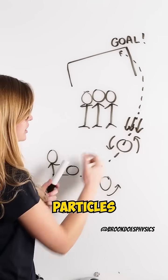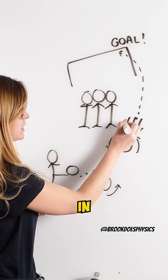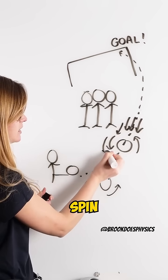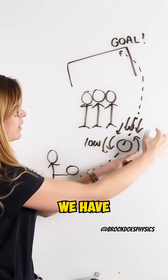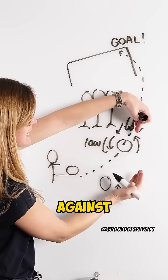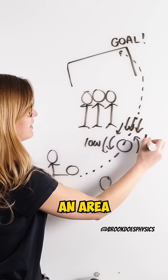And we can see air particles on this side of the ball are going in the same direction as the spin, which causes an area of low pressure, whereas on this side of the ball we have air particles going against the spin of that ball, which causes the area of high pressure.